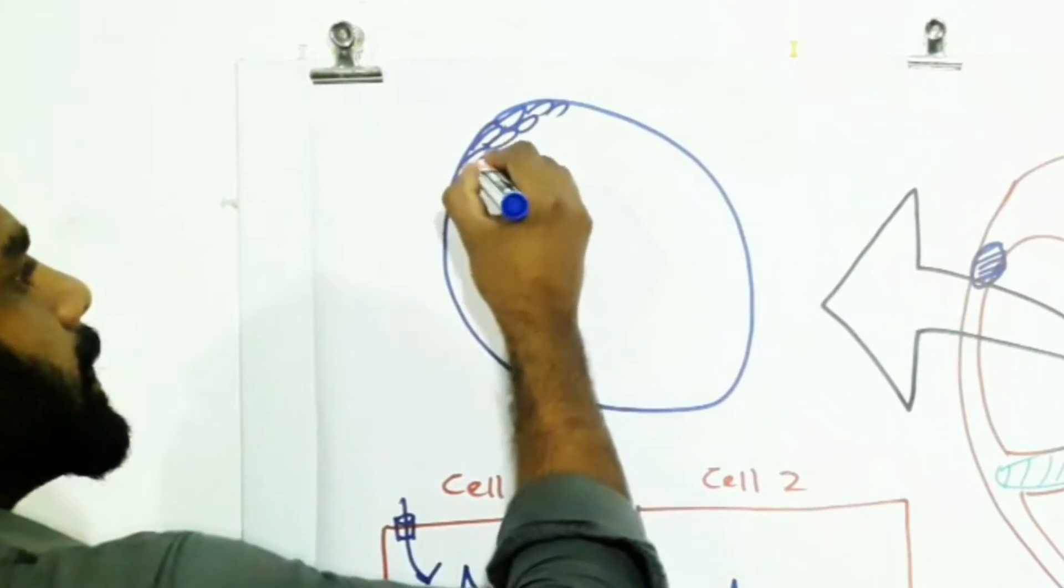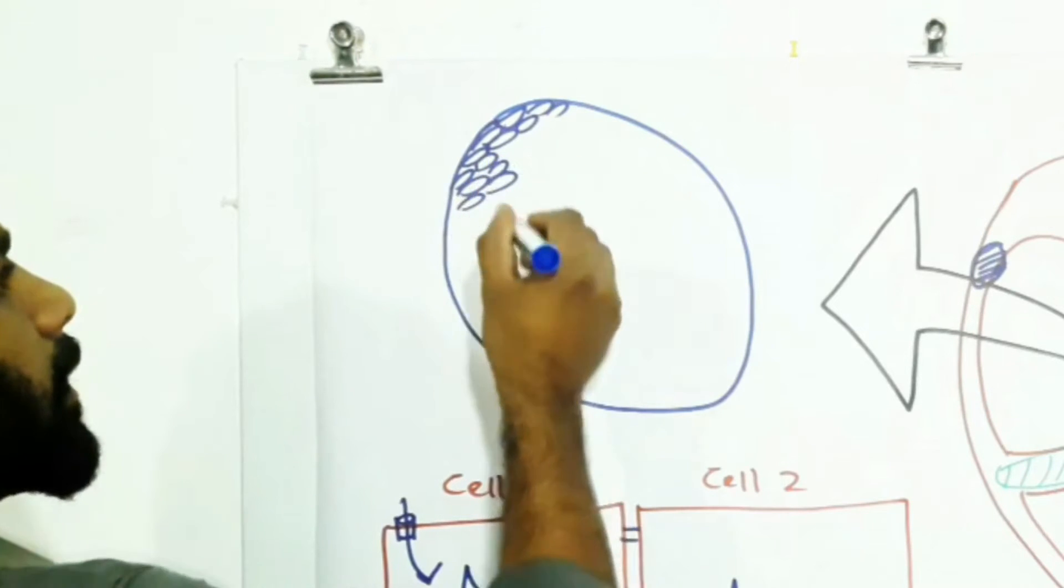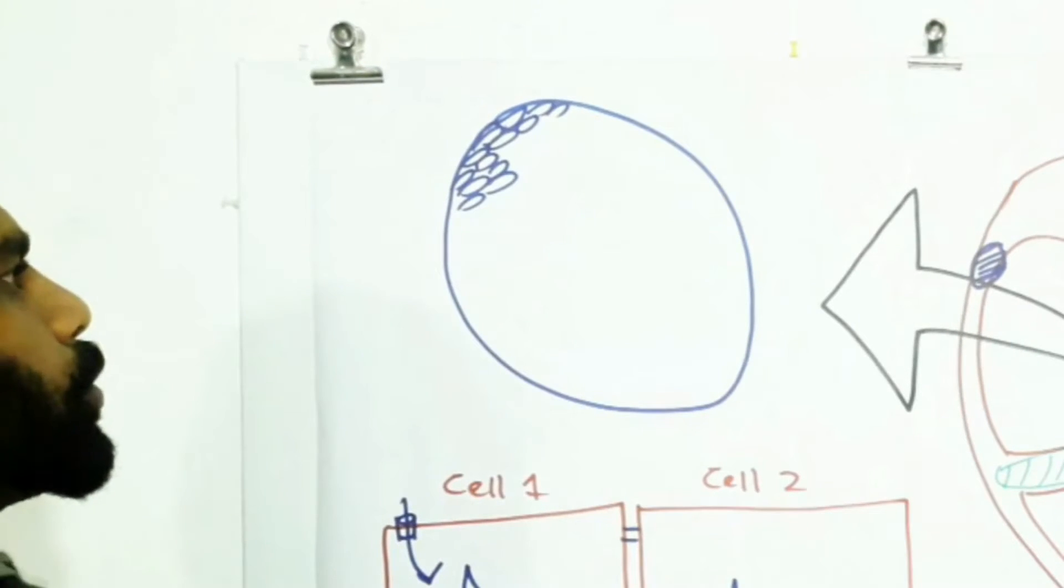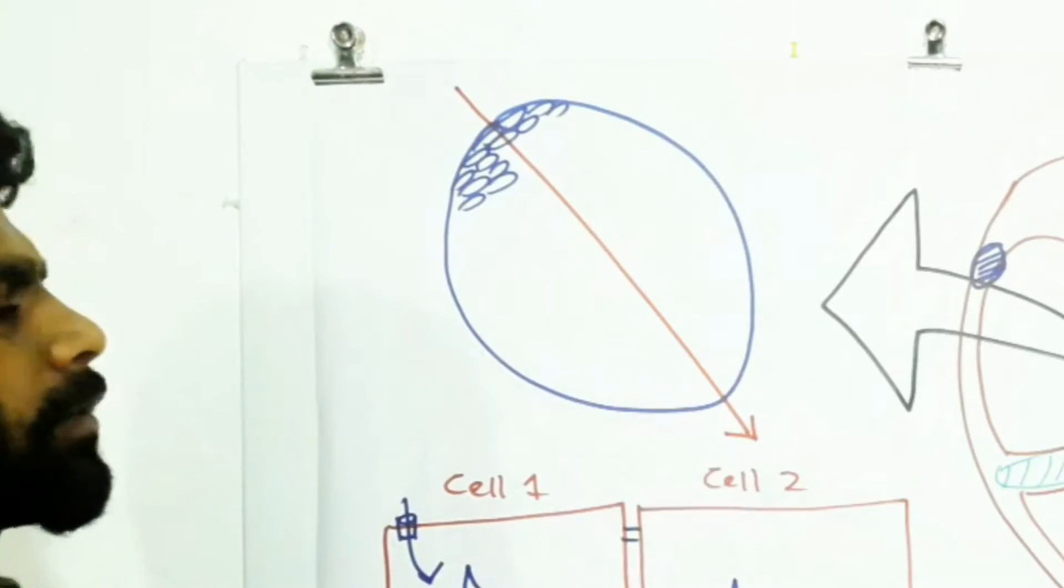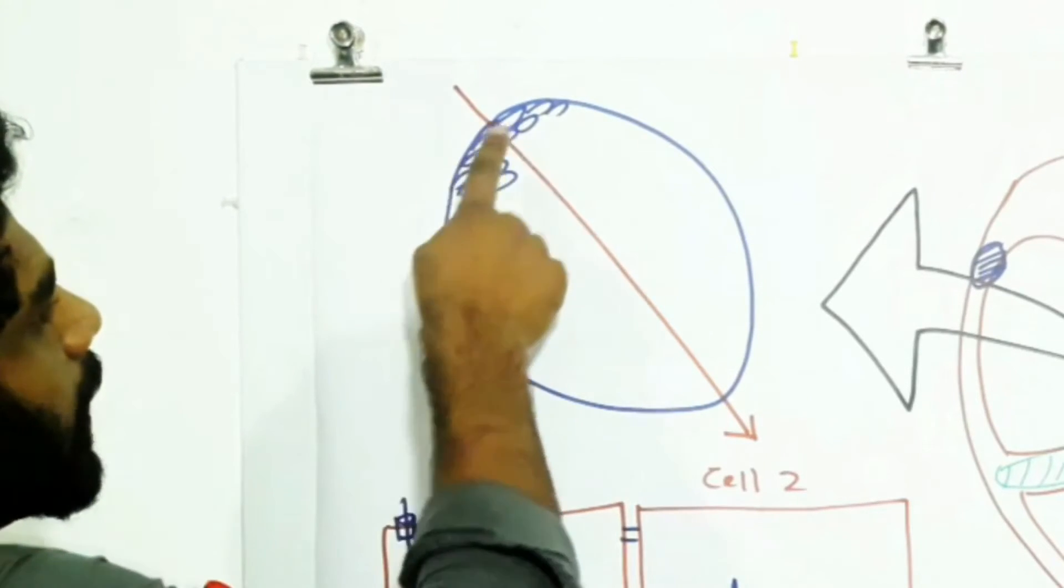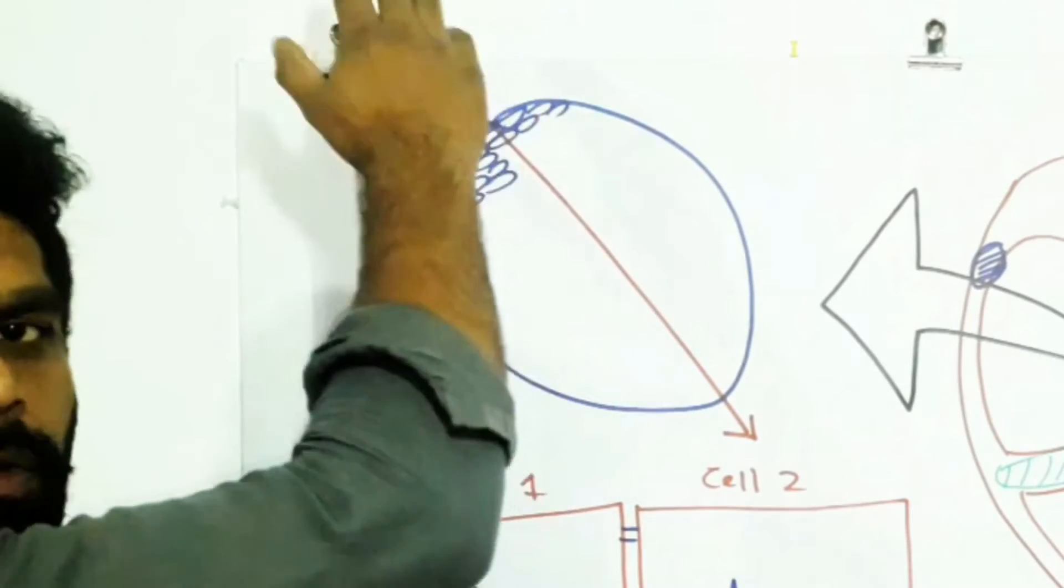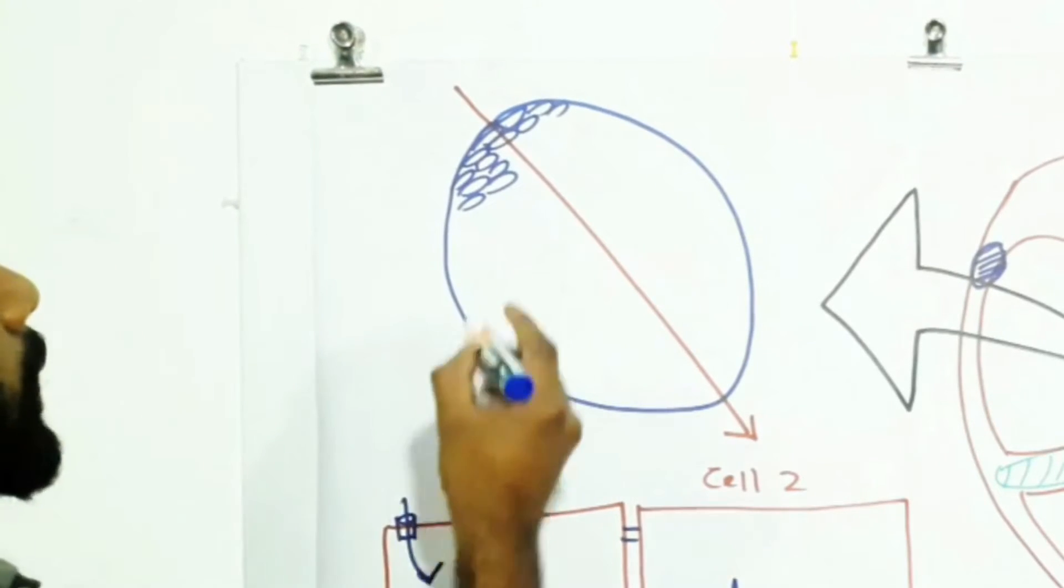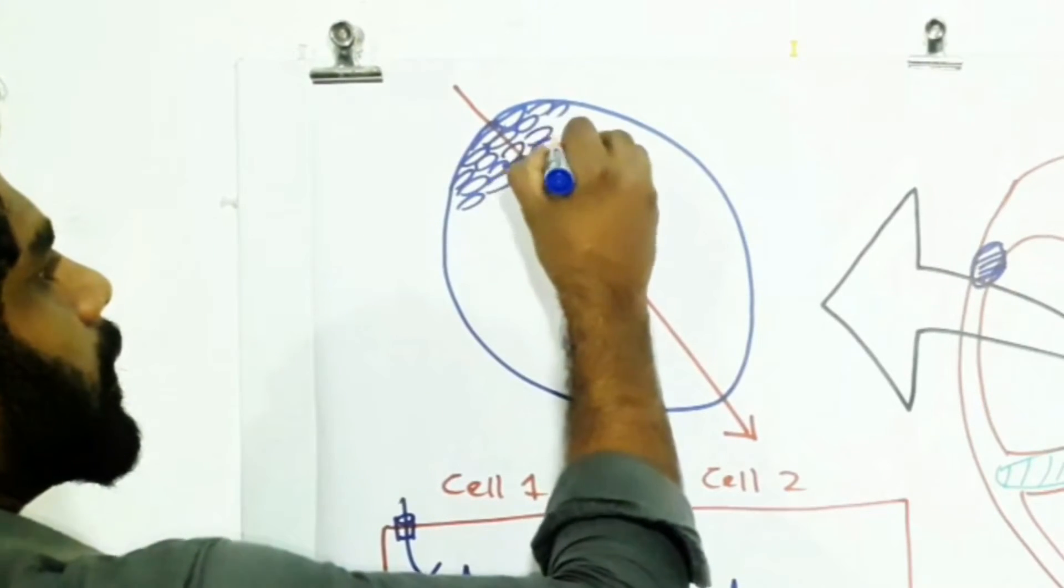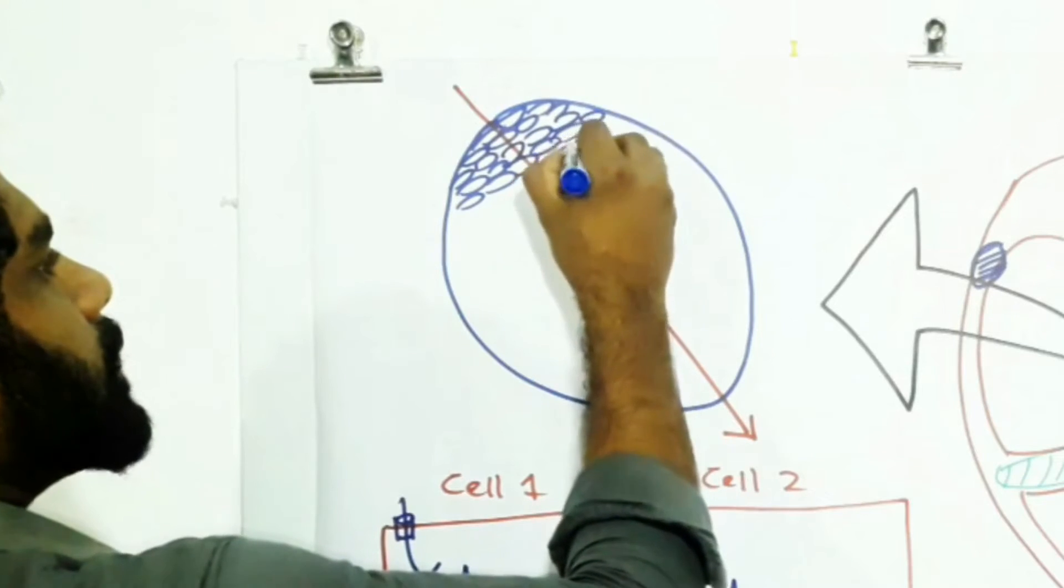These cells are arranged at right angle to the electrical impulse. This is the direction of the current and these cells are arranged at right angle to the direction of the current and there are large number of cells.